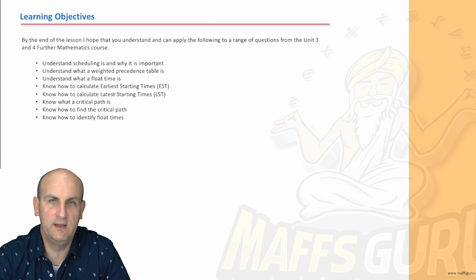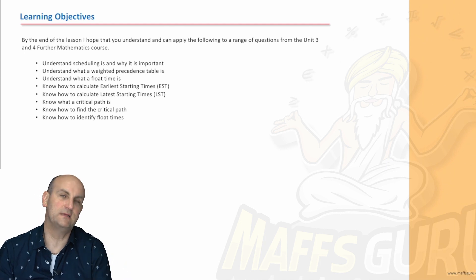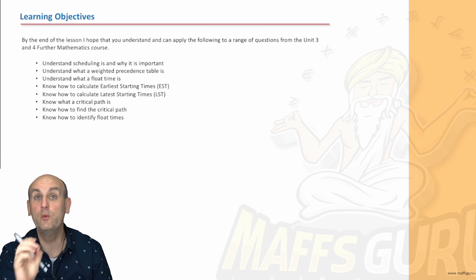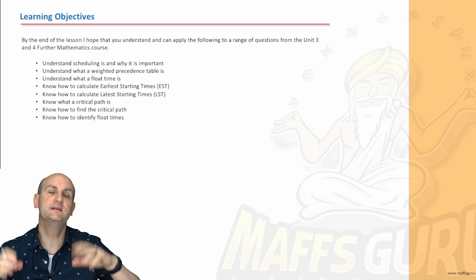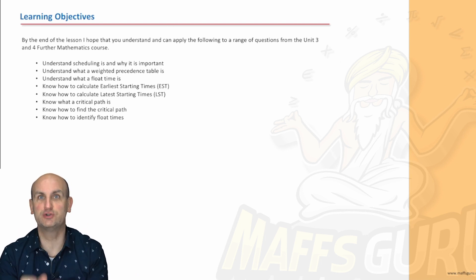What are we doing? We're understanding what scheduling is and why it's important, building on all that network stuff you've already done. Understand what a weighted precedence table is. We've seen the word weight before. Understand what a float time is. Know how to calculate early start times, latest start times and critical paths. Critical paths are so, so important.